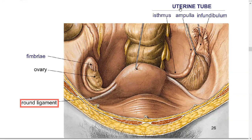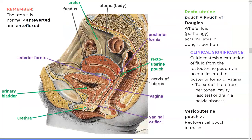They always like you to know the recto-uterine pouch and the vesico-uterine pouch — all these spaces. The clinical relevance of the recto-uterine pouch is that if you have fluid in your abdomen — from infection, ascites, or anything — it tends to collect there. In females, you can drain it or drain an abscess via the posterior fornix using a needle, which is called culdocentesis. Note that in males this is called the recto-vesical pouch, as there is no uterus.